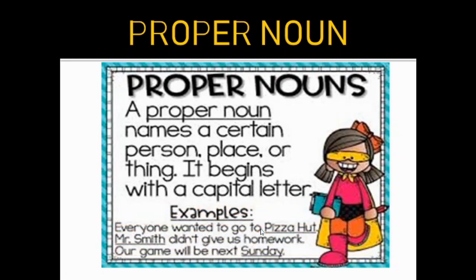Here you can see examples: 'Everyone wanted to go to Pizza Hut.' 'Mr. Smith didn't give us homework.' 'Our game will be next Sunday.' Names of months, days of the week, countries, cities, and persons are all written with capital letters and are proper nouns.